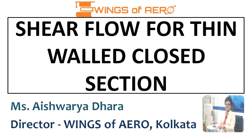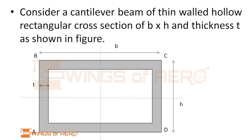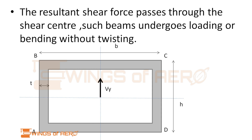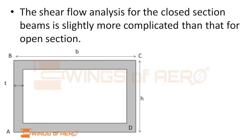Today we are going to see shear flow for thin-walled closed section. First, let's consider a cantilever beam of thin-walled hollow rectangular cross section of breadth B and height H, and the thickness of the thin-walled beam is T, as shown in figure. A resultant shear force passes through the shear center; such beams undergo loading or bending without twisting.